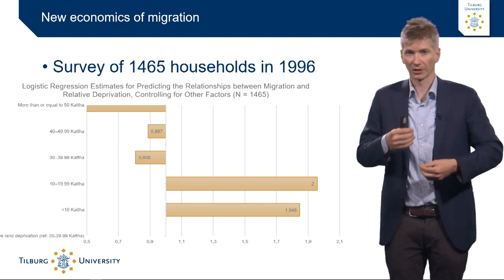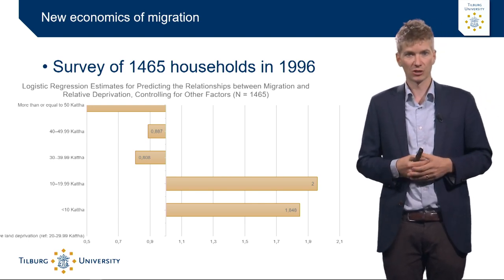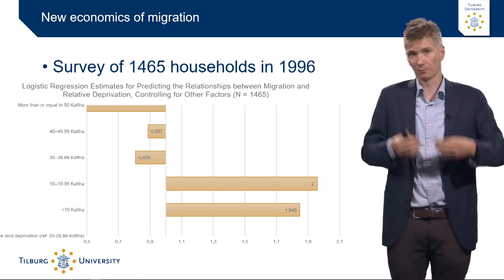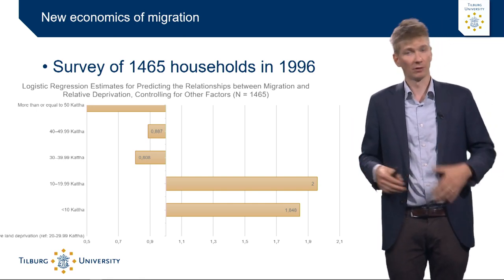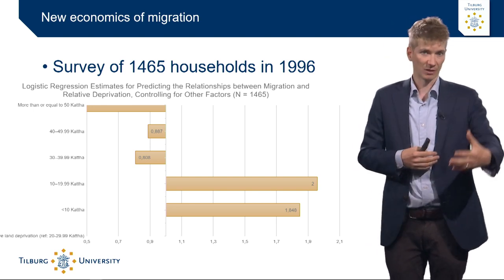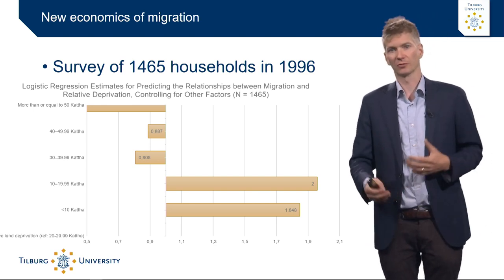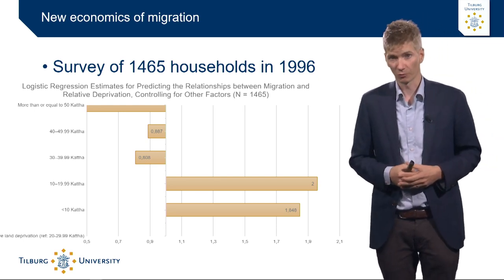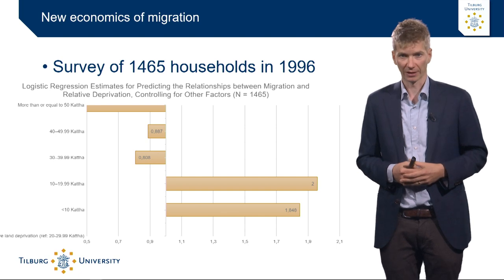Here is the principle of relative deprivation again: you look around, you see people with more land, people with more land have more power, you also want that, so you send people abroad. That is how the migration decision-making process starts to work, according to the new economics of labour migration. This was the knowledge clip on the new economics of labour migration — I hope you enjoyed it.